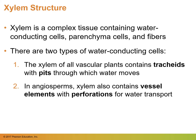Let's talk about xylem. Xylem is a complex tissue made up of elongated dead cells that are impermeable to water. They are water-conducting cells and also have parenchyma cells and fibers. The xylem is lignified, so it's hard. There are two types of water-conducting cells found in the xylem. The xylem of all vascular plants contains tracheids with pits through which water moves. In angiosperms, xylem also contains vessel elements with perforations for water transport.